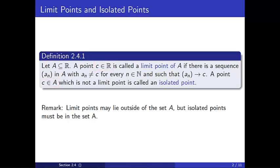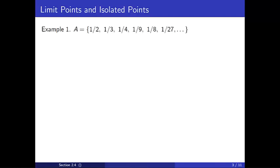For our first example, let A be the set {1/2, 1/3, 1/4, 1/9, 1/8, 1/27, ...} such that the terms are alternating powers of 2 and 3. I claim that 0 is a limit point of A. Notice 0 isn't an element of A, but that's okay because limit points need not belong to the set.